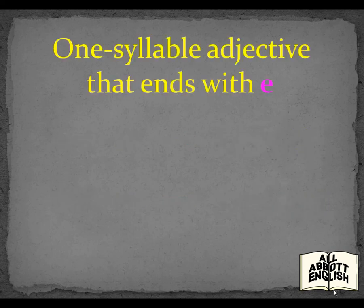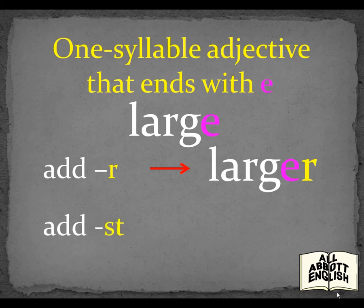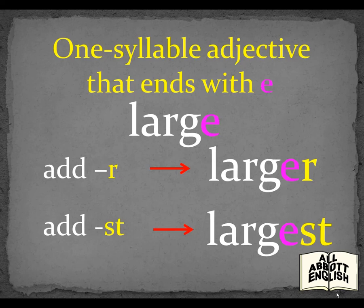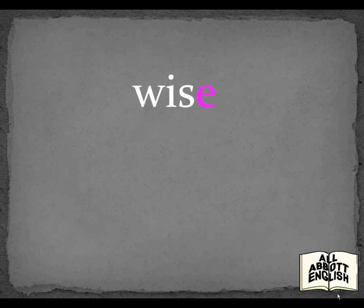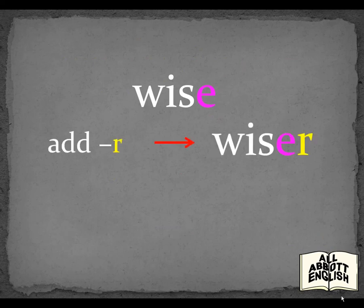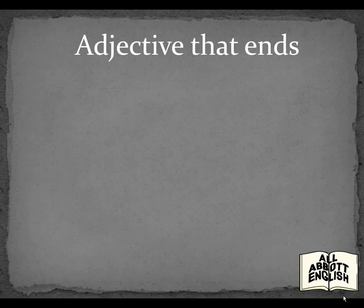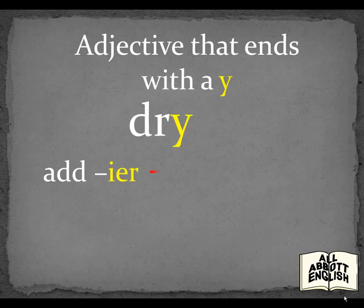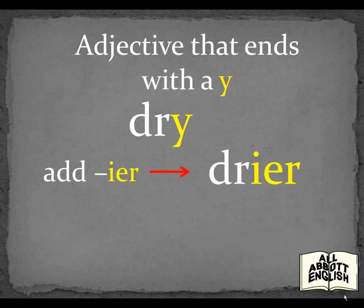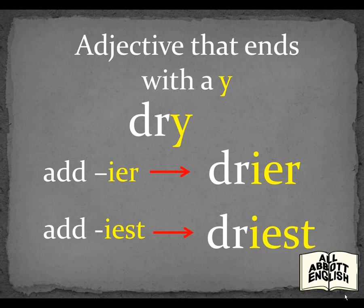One Syllable Adjective that ends with an E: Add R for Comparatives, Add ST for Superlatives. Large — Larger — Largest. Wise — Wiser — Wisest. Adjective that ends with a Y: Add ER for Comparatives, Add EST for Superlatives. Dry — Dryer — Dryest.